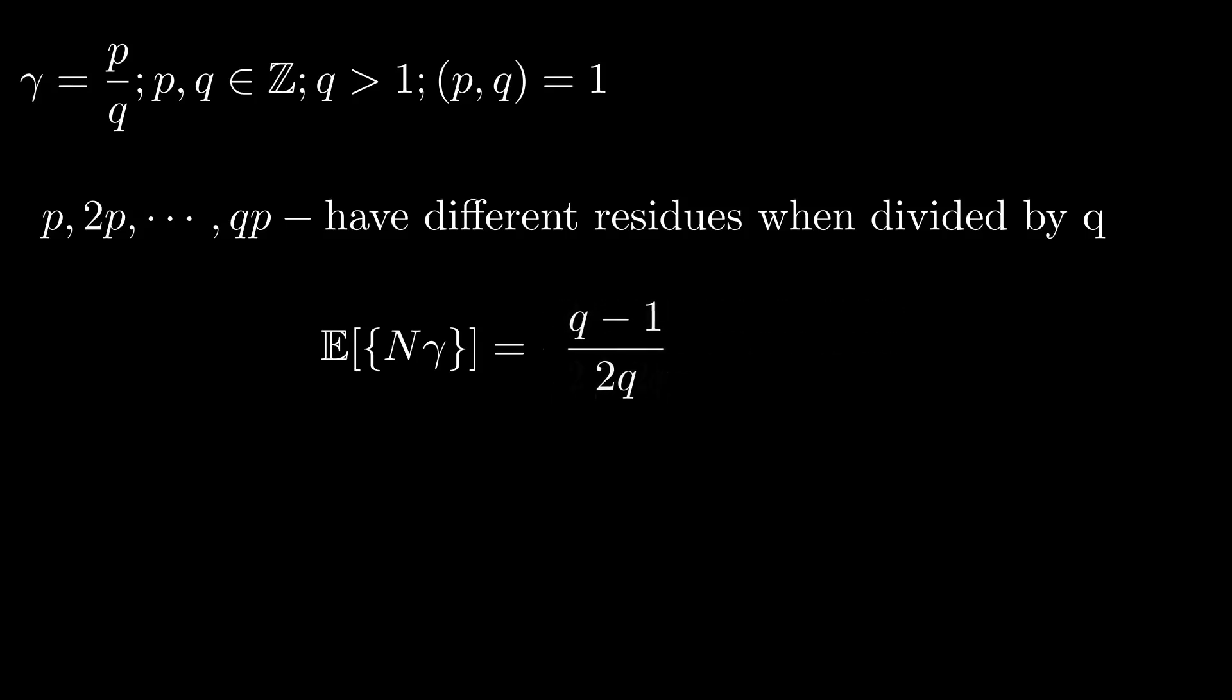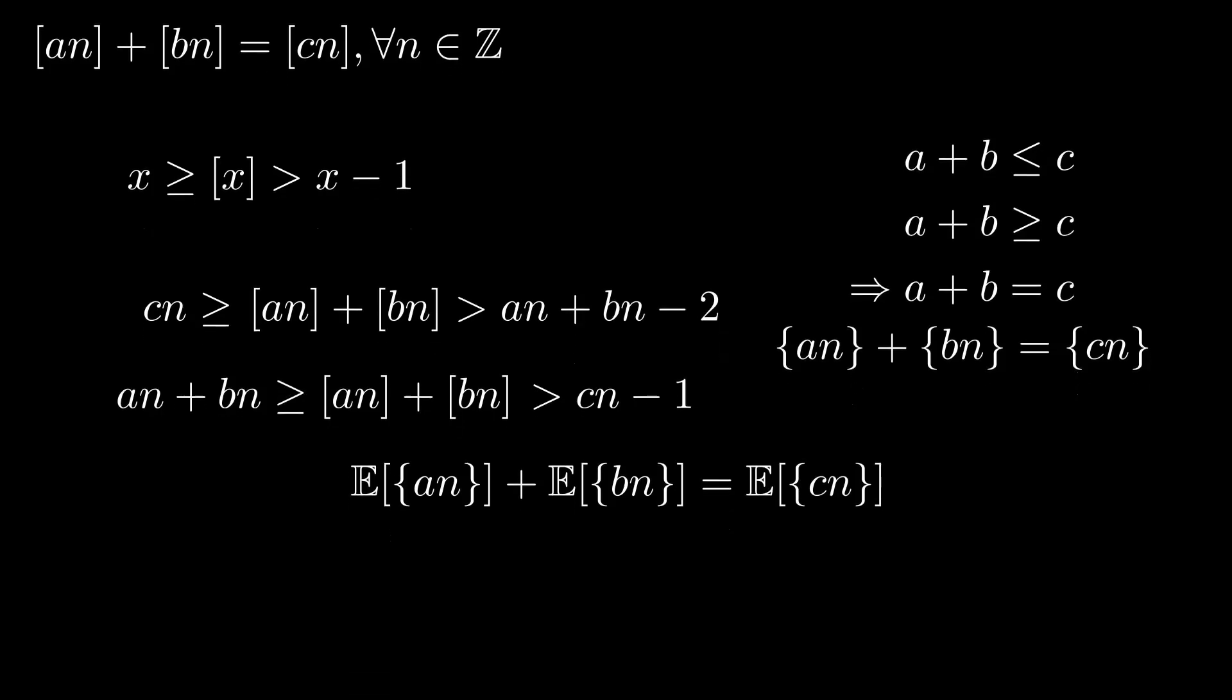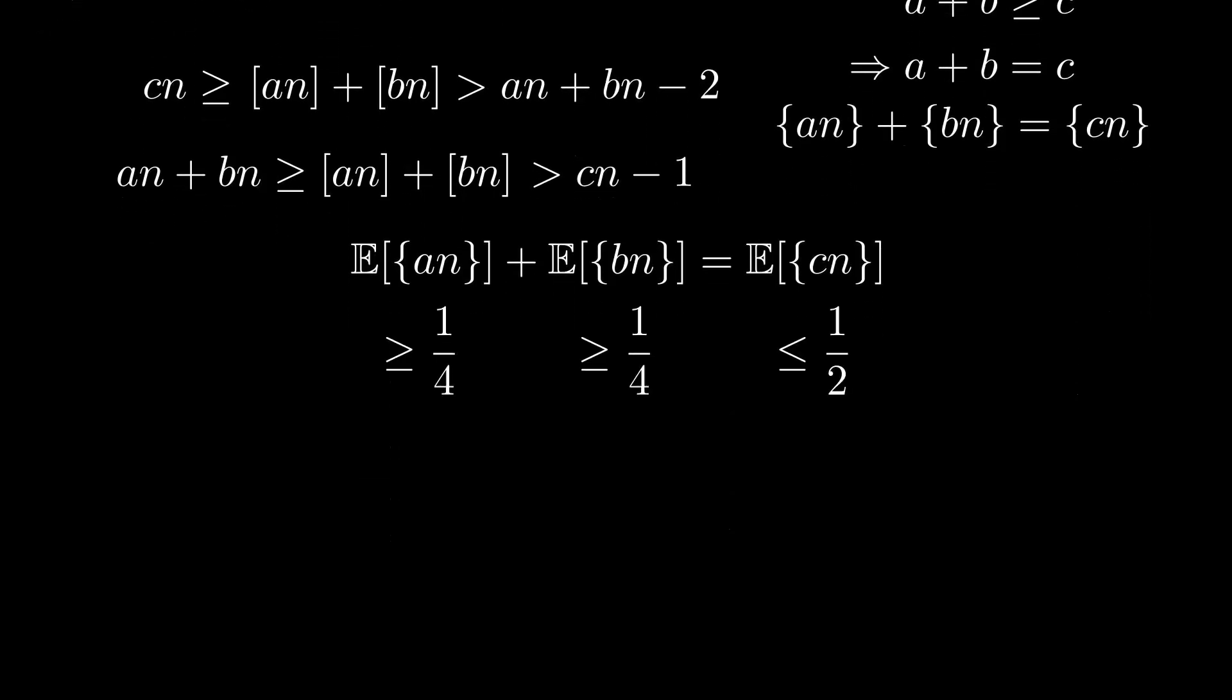In this case, the mathematical expectation of the fractional part of n gamma lies in a certain interval. Now let's return to our problem. We can separately choose the fractional parts of the numbers na, nb, nc. So the following equality is true.